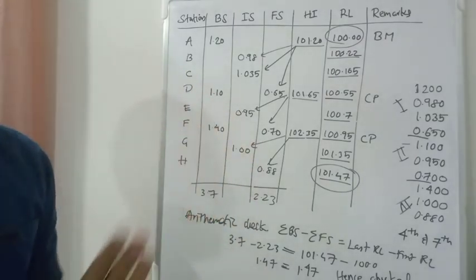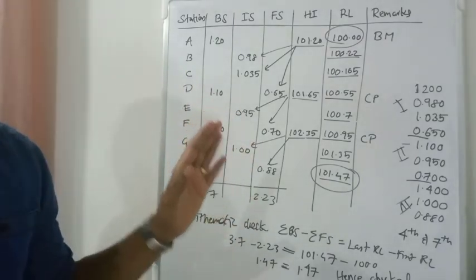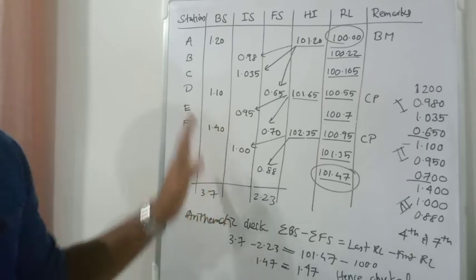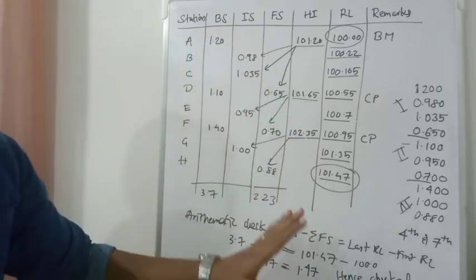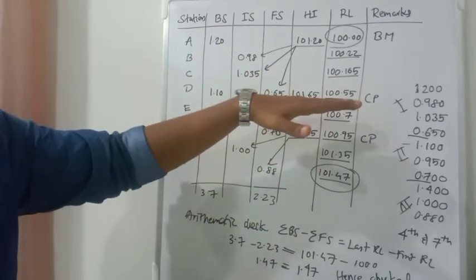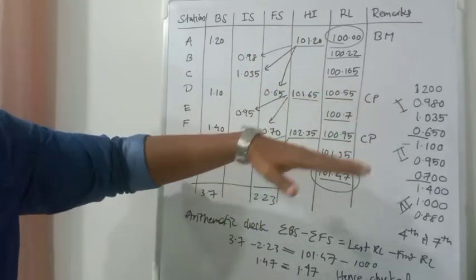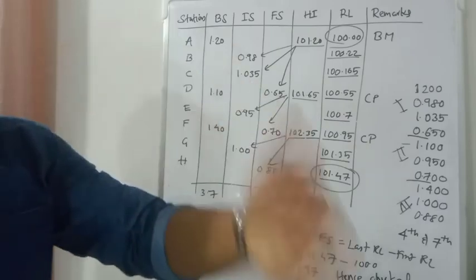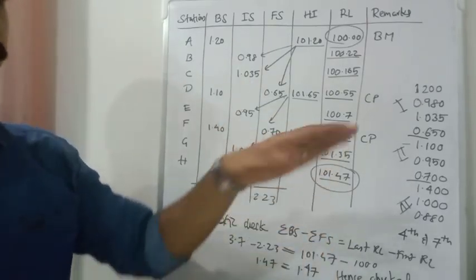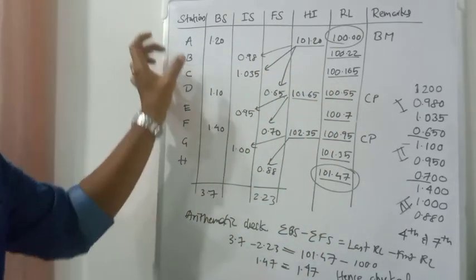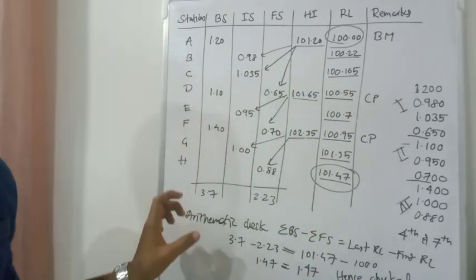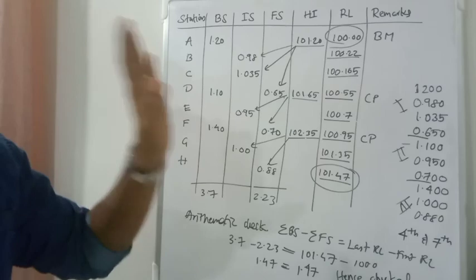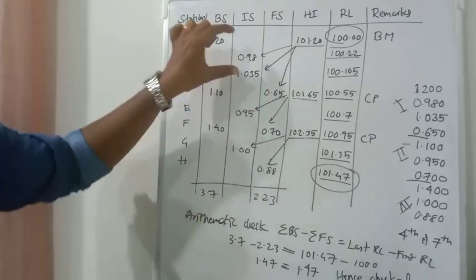So this is a typical leveling problem that we have been solving. You can see that you can follow the same pattern for other problems. It depends on where the instrument is shifted — in this case at the 4th and 7th readings. Please watch other related videos and feel free to contact me to remove any doubts. Thank you.